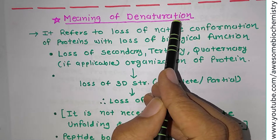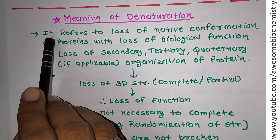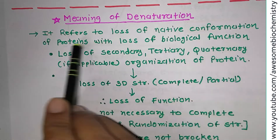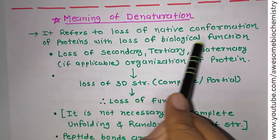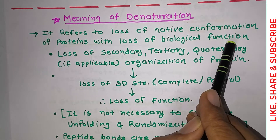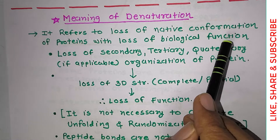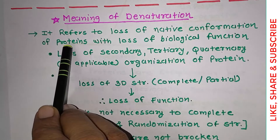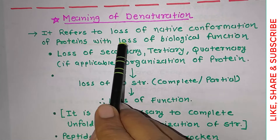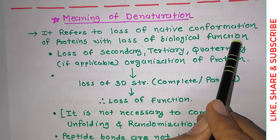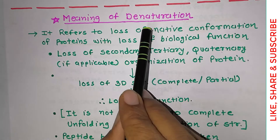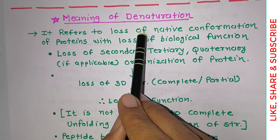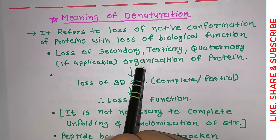What is denaturation? Denaturation refers to loss of native conformation of proteins with loss of biological function. Here two conditions are mentioned: one is loss of native conformation of protein, and the second condition is loss of biological function. To call something denaturation, both conditions must be fulfilled.